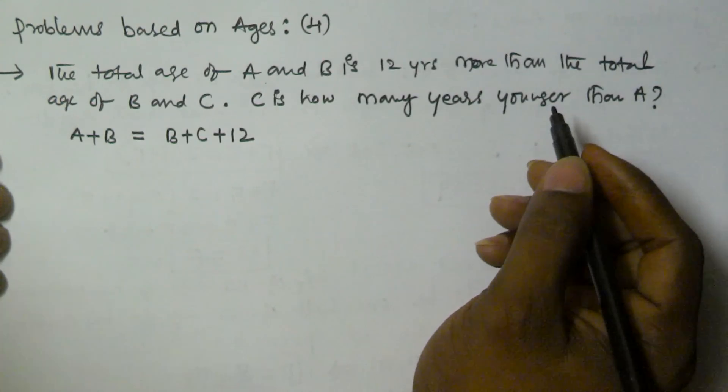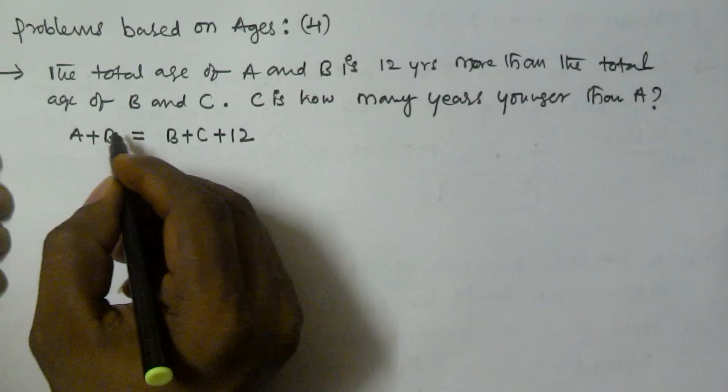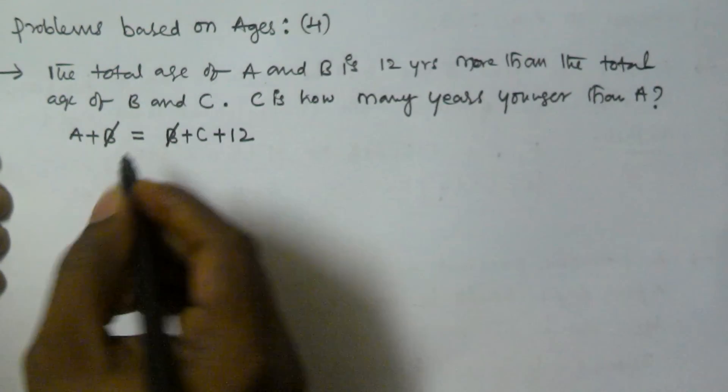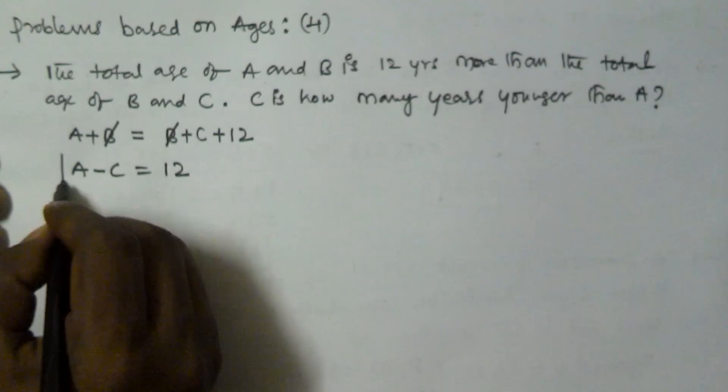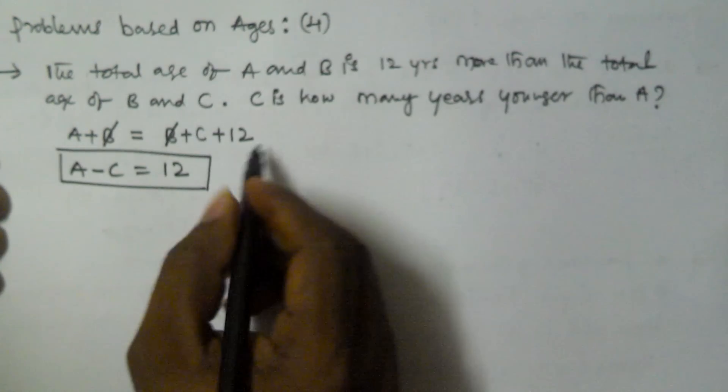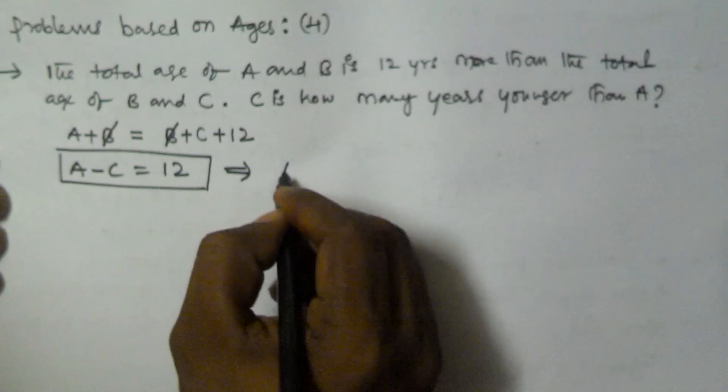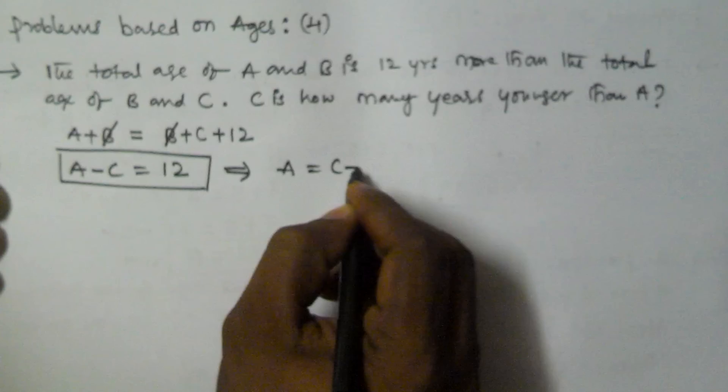Both sides B is there, so I am canceling B. I am taking A minus C is equal to 12. From this equation, you can write the same equation as A is equal to C plus 12. That means by adding 12 years to C, that is going to be equal to A's age.